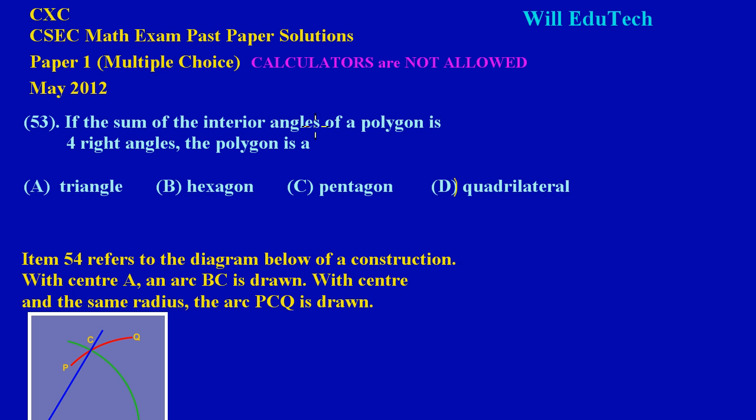Now here it states: if the sum of the interior angles of a polygon is four right angles, the polygon is a... Well, here they gave us some options: A) triangle, B) hexagon, C) pentagon, D) quadrilateral.